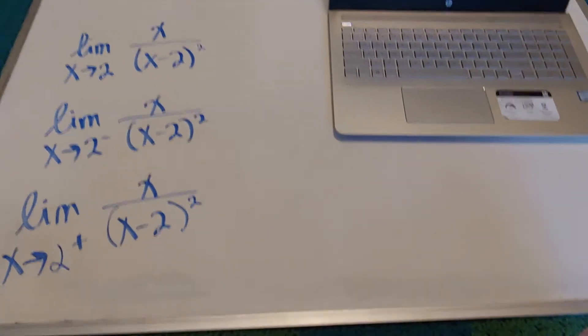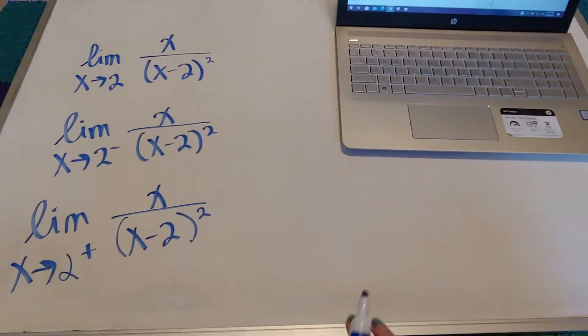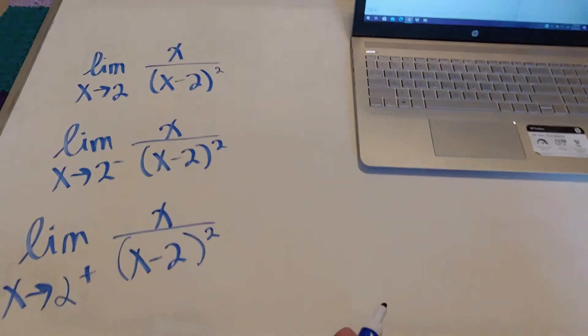In this video, we're going to be looking at walking near a vertical asymptote. Now, how do you know that you have a vertical asymptote?